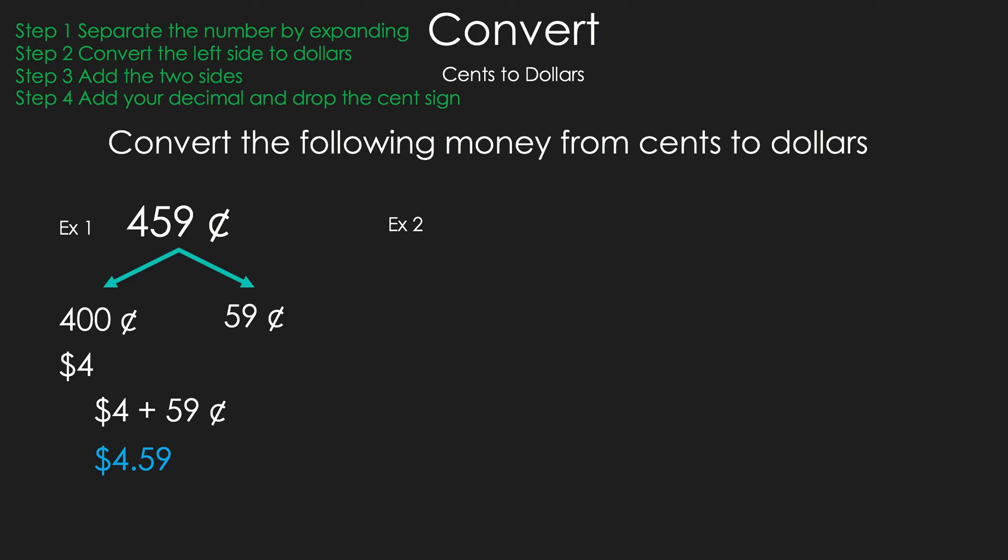Now, we're going to do example 2. We have just 4 cents. It's a little hard to expand, so we're just going to add some empty zeros just so that you can see it visually. But remember, when you're having zeros, it can be tricky with money. Now we're going to separate them. We have 0 cents for the hundredth place and we have 0.04 cents for the decimal. Now we convert 0 cents to dollars, which is $0. And now we're going to add them and we get $0.04 as your answer.